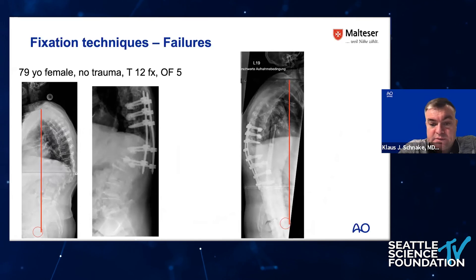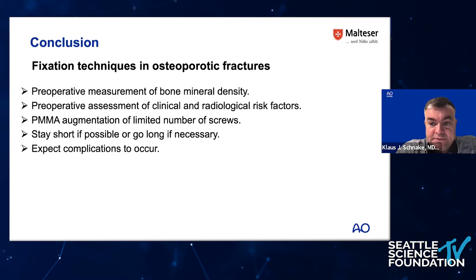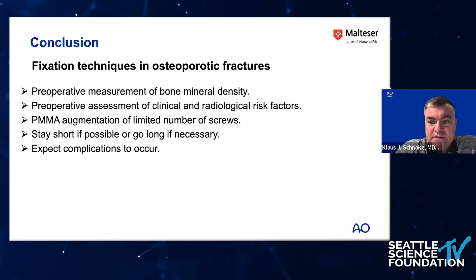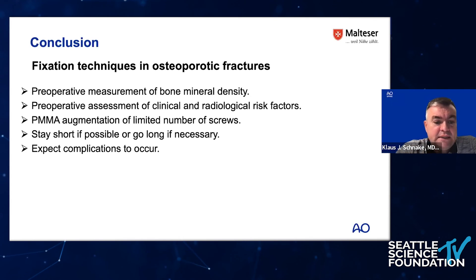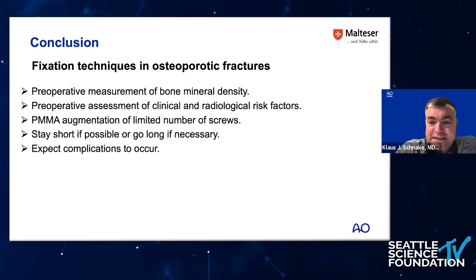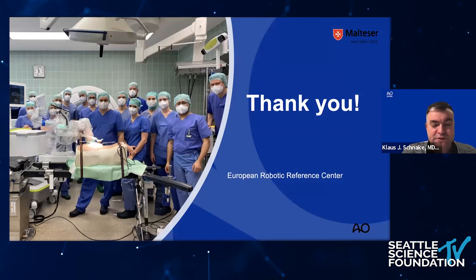In conclusion: measure bone mineral density preoperatively — even with CT using Hounsfield units; use augmentation below 100 Hounsfield units; assess clinical and radiological risk factors beforehand; PMMA augmentation makes sense but limit it to the uppermost and lowermost screws; stay short if possible or go long if necessary. If you start surgery in these patients, expect complications. Thank you very much, and I look forward to your questions.